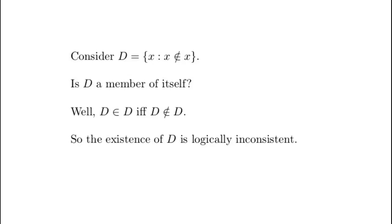This is the set that gave Bertrand Russell a lot of sleepless nights about 120 years ago. Let us consider the set of all sets that are not members of themselves. So capital D is a set of all x such that x is not an element of x. The set of natural numbers is an example. The set of natural numbers is not a natural number.